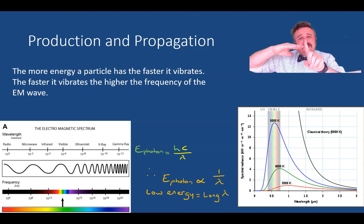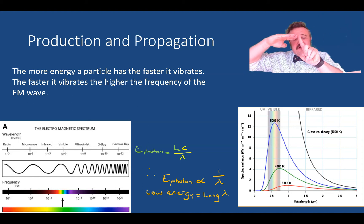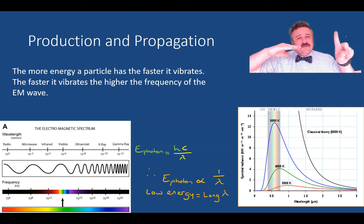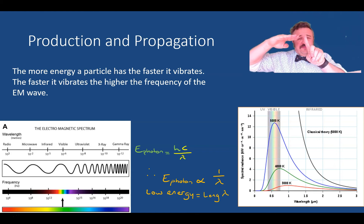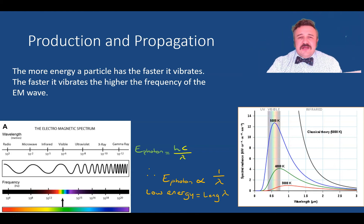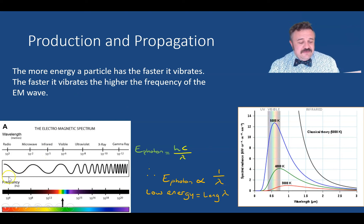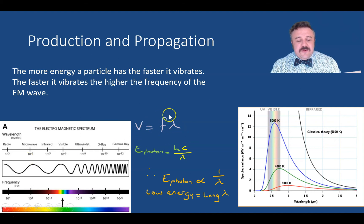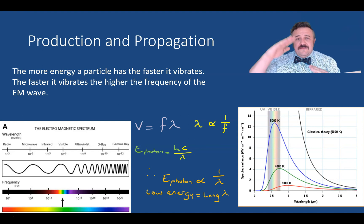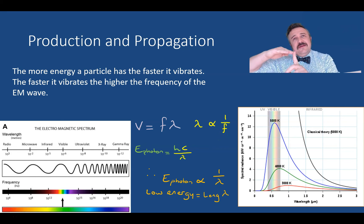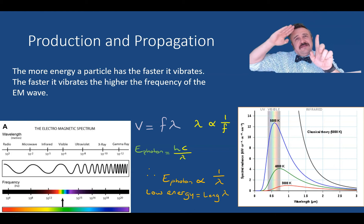That makes sense because the more energetic something is, the faster it's vibrating. As the wave moves outward at a constant speed, it doesn't have a chance to travel as far between oscillations if it's vibrating fast. If it oscillates slowly, the wavelength gets bigger. Energy of a photon is inversely proportional to wavelength. Everything is giving off infrared energy. The speed of a wave equals frequency multiplied by wavelength.